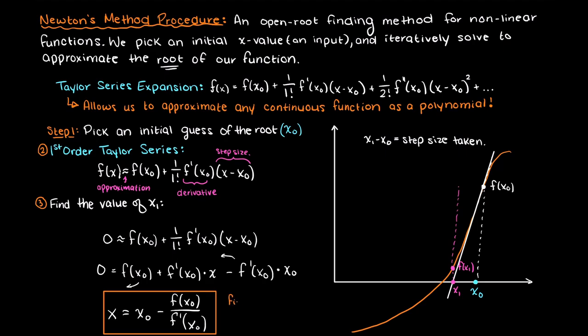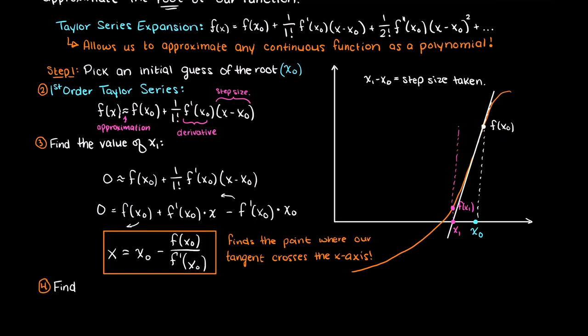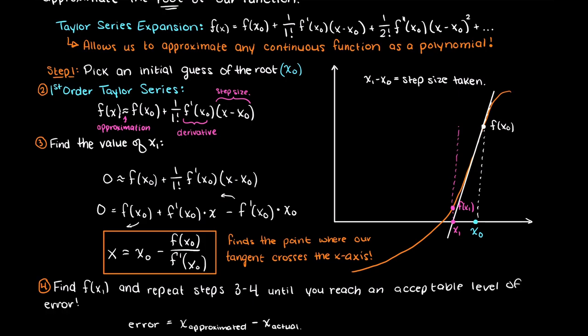Now that we have solved for the input that gives our tangent an output of 0, we plug this input into our function and find the output for our next iteration in Newton's method. Then we just continue our process until we reach an acceptable amount of error, that is when our approximated x value is close enough to our actual x value.